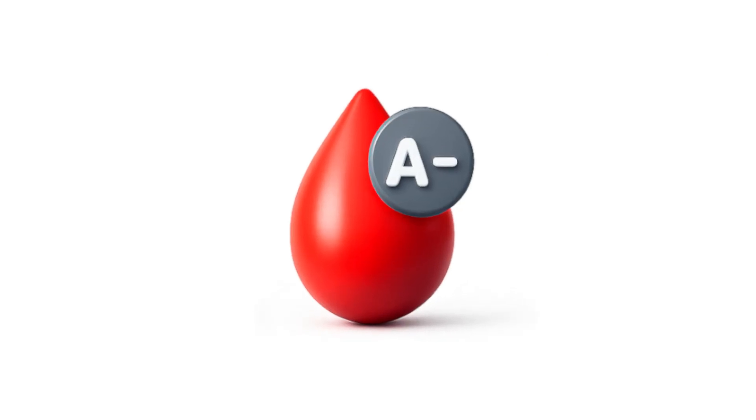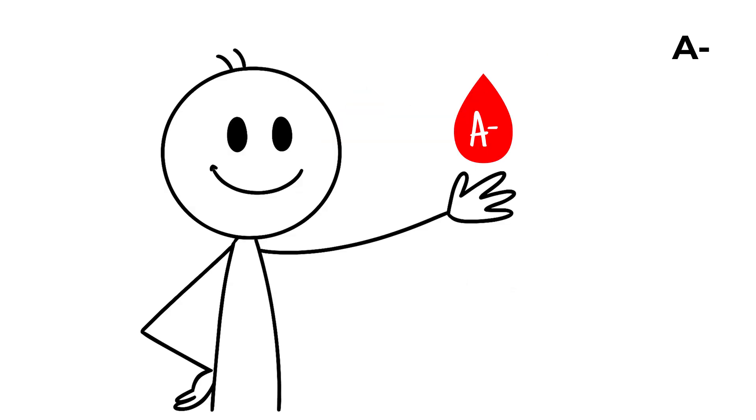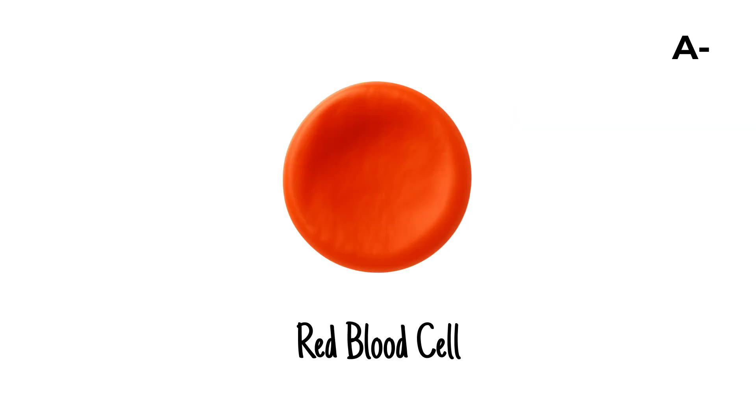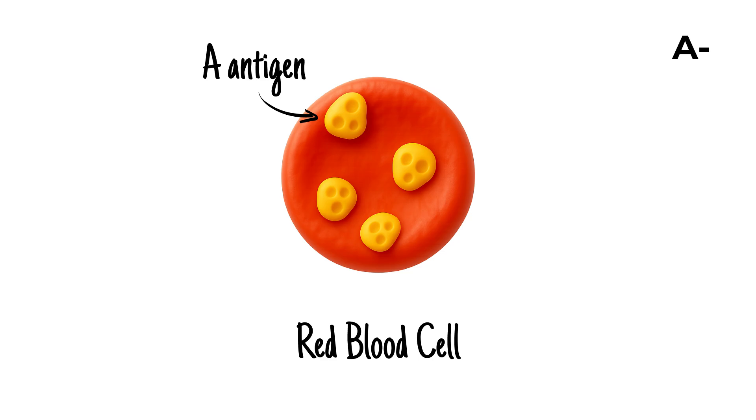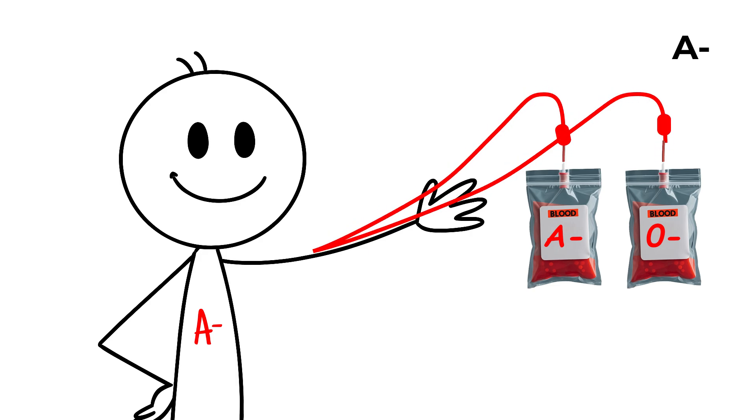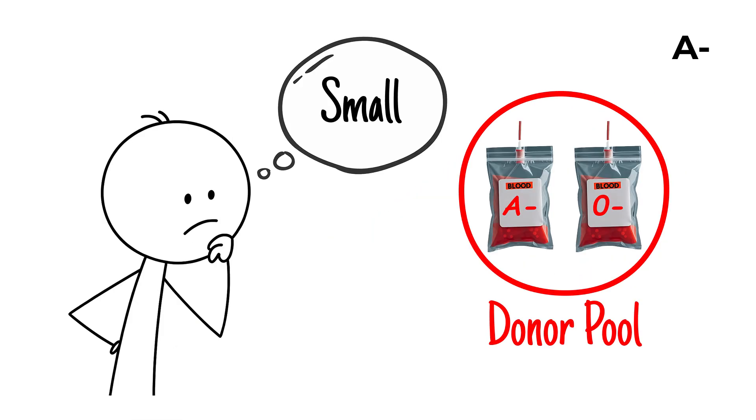A negative is among the rarest blood types, found in less than 2% of the world's population. Its red blood cells contain the A antigen, but lack the Rh D factor, which limits transfusion compatibility. People with A negative blood can only receive donations from A negative or O negative donors, making their compatible donor pool quite small.